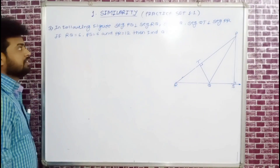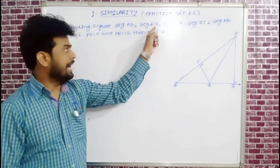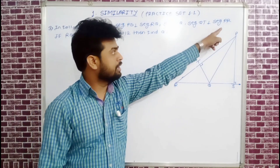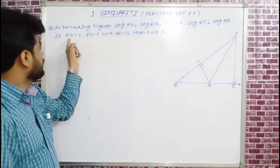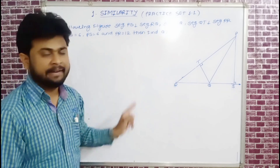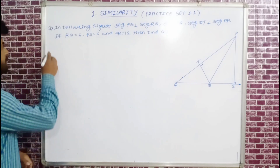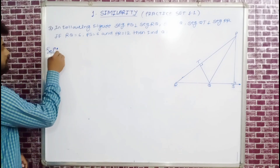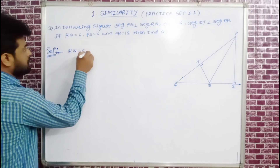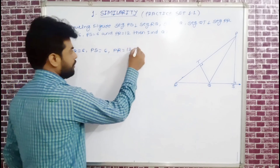Question number 3: In the following figure, segment PS is perpendicular to segment RQ, and segment QT is perpendicular to segment PR. Given values of RQ, PS, and PR, find the length of QT.